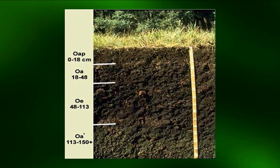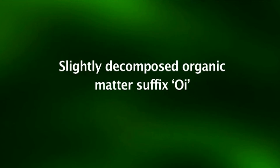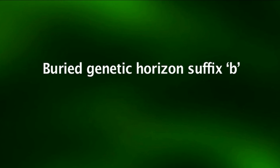Suffix 'e' for intermediately decomposed organic material — for example, Oe — used to designate moderately decomposed organic material with fiber content of 17 to 40 percent. Suffix 'i' for slightly decomposed organic matter — used with O to designate least decomposition of organic matter with fiber content more than 40 percent by volume. Suffix 'b' is used in mineral soils to designate identifiable buried horizons with features developed before burial.